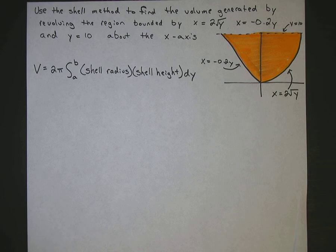Okay, on this problem, we're asked to use the shell method to find the volume generated by revolving the region bounded by x equals 2 square roots of y, x equals negative 0.2y, and y equals 10 about the x-axis.